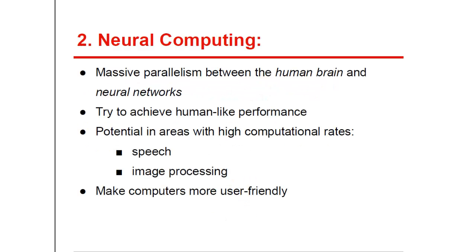Neural computing developed from massive parallelism, an analogy which was created between the human brain and neural networks. It represents an area in computer science, particularly in AI, which investigates computational models aiming at achieving human-like performance in computer systems through a dense interconnection of simple processing elements — that is, by establishing an analogy with the human brain. Its greatest potential is in areas with high computational rates, such as speech and image processing. The purpose of neural computing is to make computers more user-friendly.